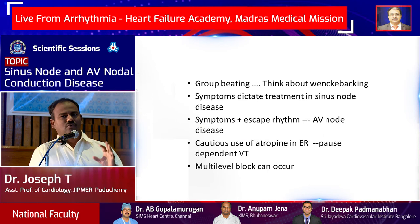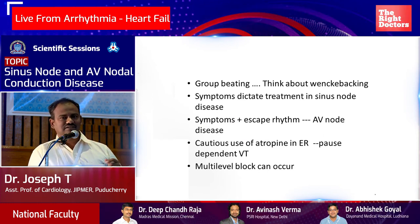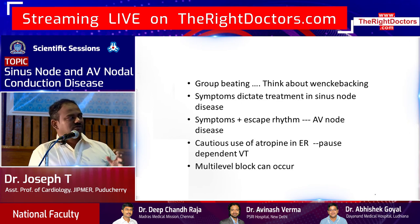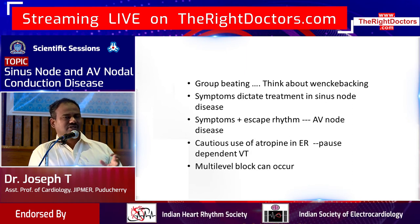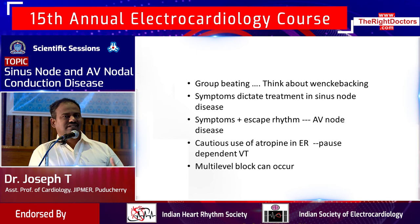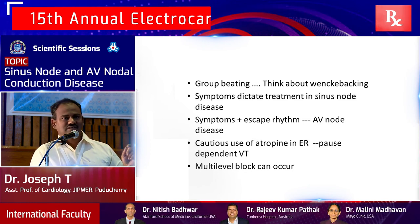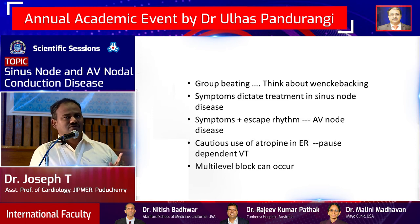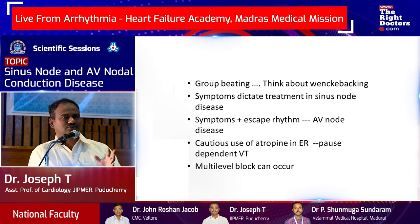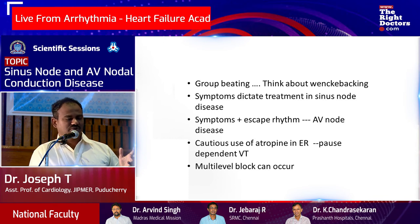Symptoms dictate treatment in sinus node disease. For AV node disease, both symptoms and the type of escape rhythm — narrow versus broad QRS — dictate management. In an emergency, if it is an infranodal block, treat the patient and then evaluate; if nodal, evaluate and then treat. Importantly, if a patient with bradycardia has an infranodal block and you give atropine, you will worsen the conduction — a 2:1 block can become 3:1 or 4:1 and may cause pause-dependent VT. There can also be multiple level blocks present simultaneously.